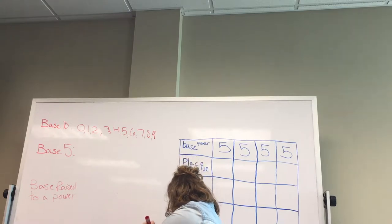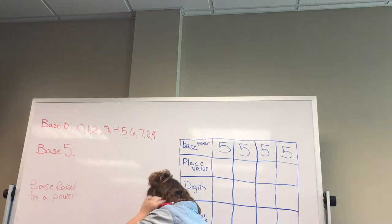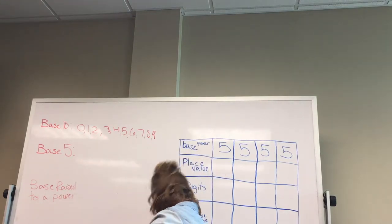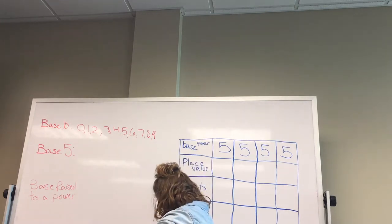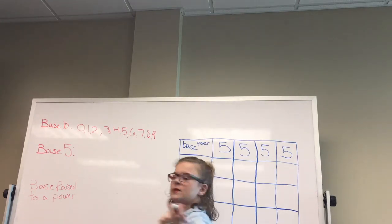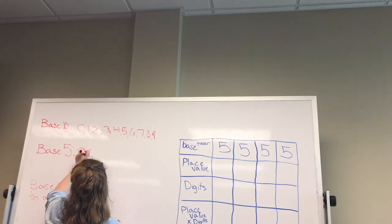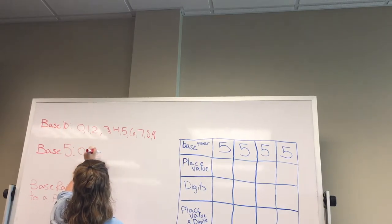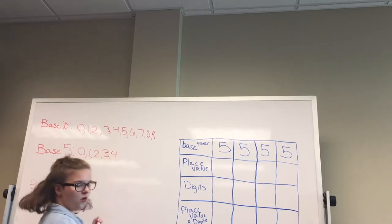Base five is a different base than base ten. This one only has five digits from zero to four: zero, one, two, three, four.